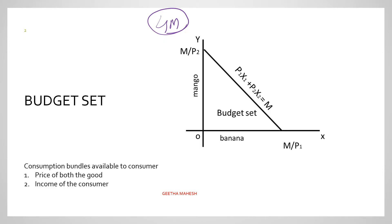We will discuss budget set in detail by considering two goods. We use an L-shaped diagram to represent these two goods. When you have the price of two goods along with the consumer's fixed income, you can determine different combinations. These combinations together are called the budget set.